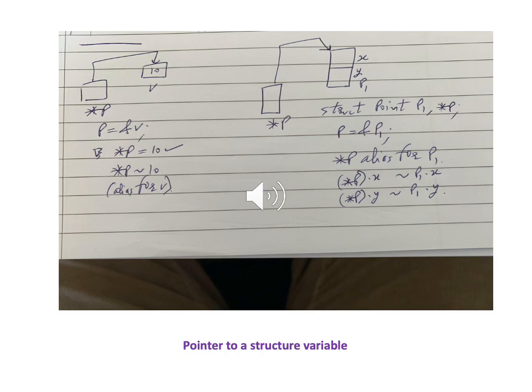Here we see a picture depicting the use of a pointer with both a regular variable and a structure variable. On the left-hand side — which we covered in chapter five on pointers — we have a regular integer variable v with value 10, declared as int v = 10. We declare a pointer with int *p and then make it point to v by writing p = &v. The ampersand gives us the starting memory address where v is stored.